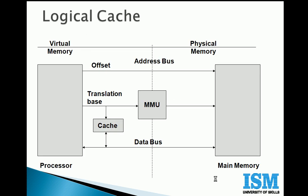Assume the cache is introduced before MMU. This is the CPU, this is main memory. The CPU releases a virtual address which needs to be converted into the physical address by the MMU. Now this cache holds the recently accessed data from main memory, addressed using virtual address. This cache is addressed virtually, so we call this a logical cache.